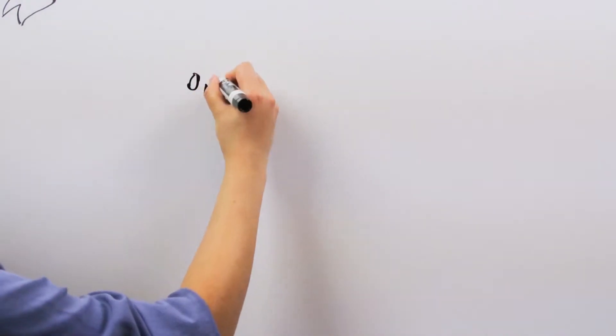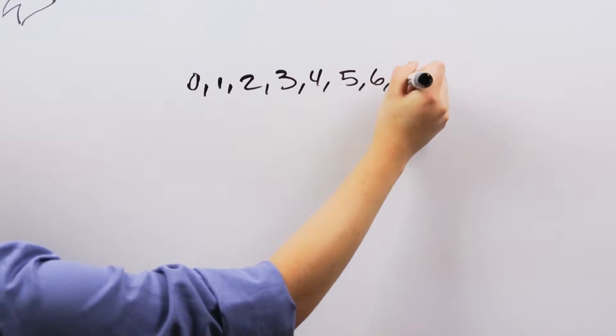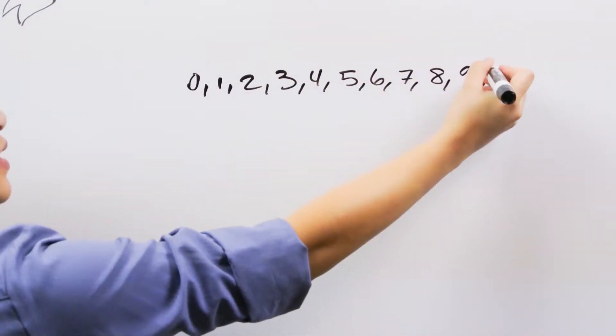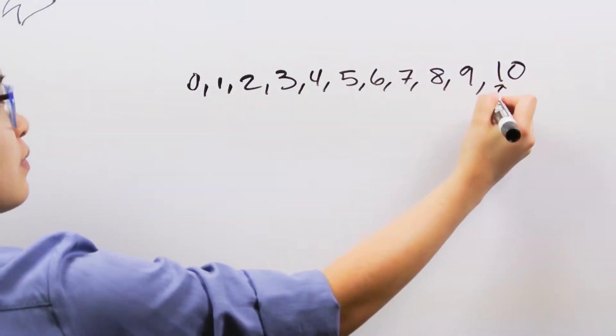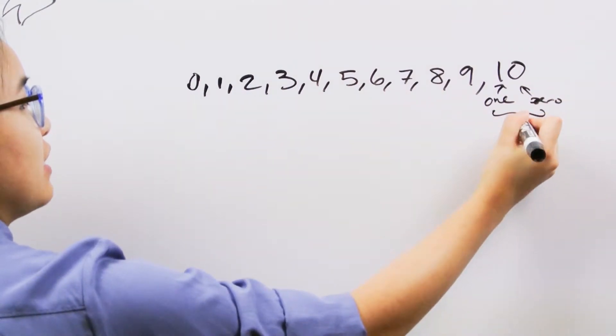Now, you might notice that something interesting happens when we count to 10. We start off with zero, one, two, three, four, five, six, seven, eight, nine, and when we get to 10, we suddenly have two numbers on the board. A one and a zero, and together these make 10.